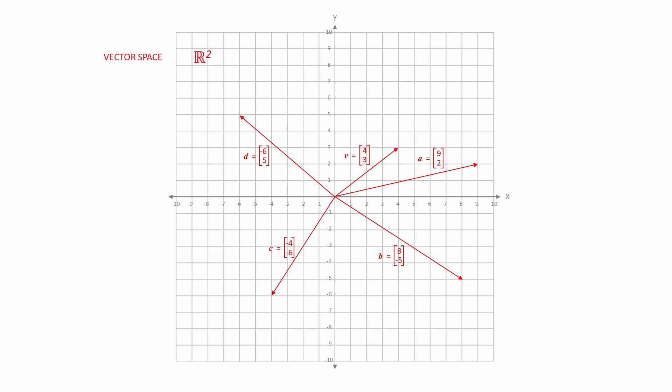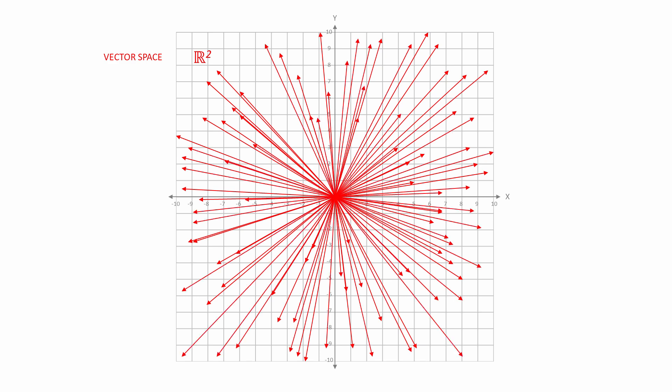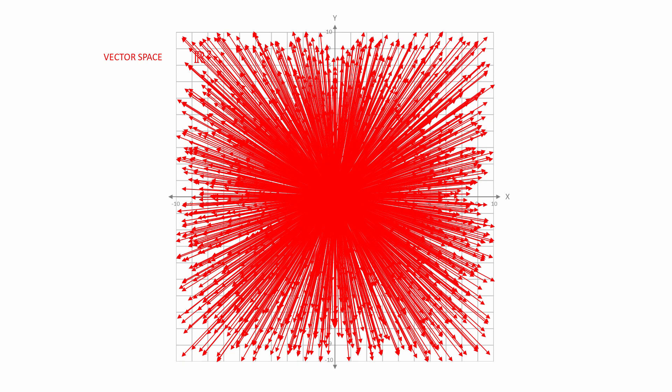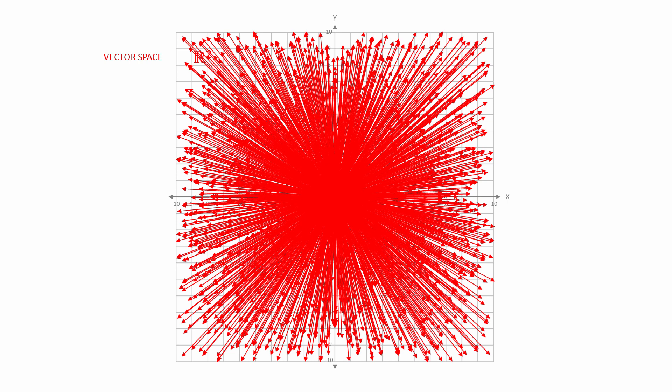To put it another way, every possible vector in this vector space is a member of a set of vectors called capital R superscript 2. The letter R stands for real numbers, because each vector is a list of real numbers, and the 2 is the number of dimensions, or the number of values in each list. If you think about it, there are an infinite number of vectors possible in this vector space, because there are an infinite number of different lengths possible, pointing in an infinite number of different directions.